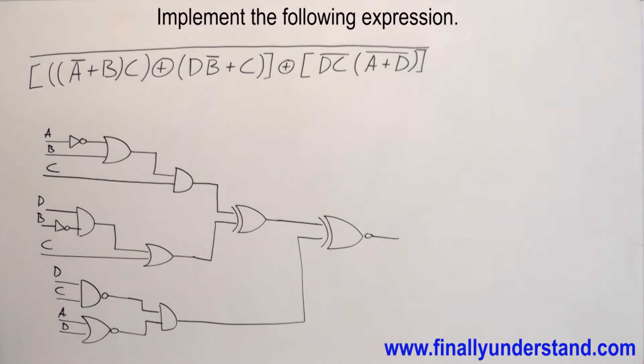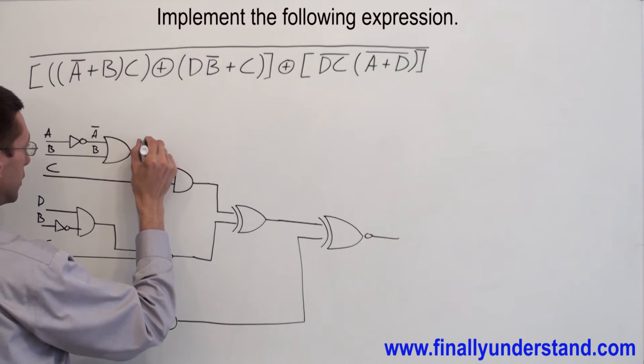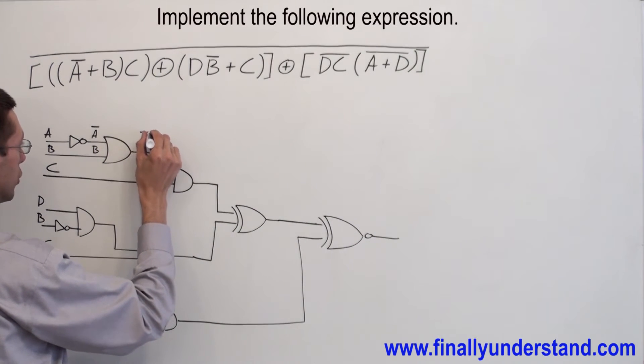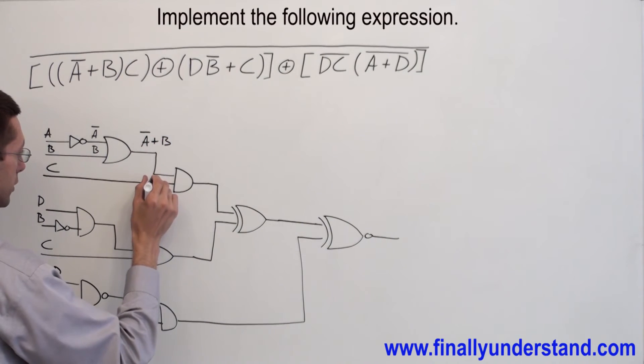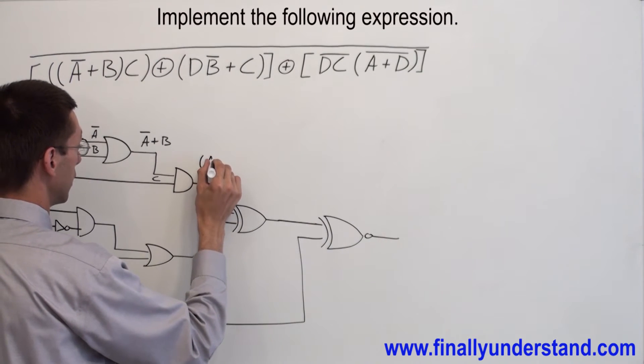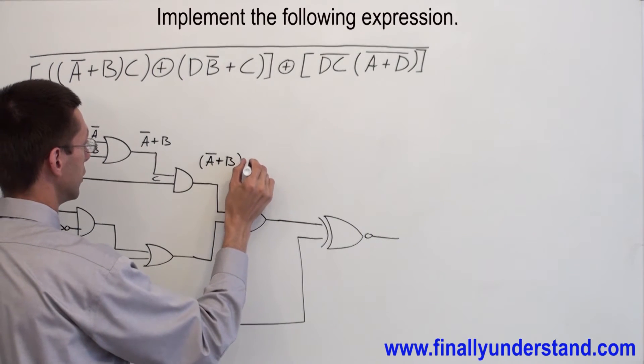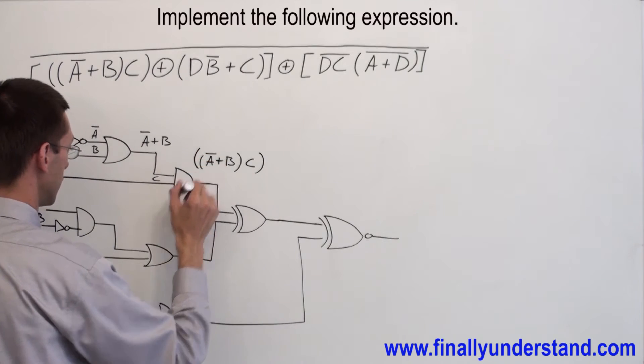This is the circuit for my expression. Let's take a look if this is correct solution. Let's find the output function of this circuit. I have A going to the inverter, so that's why I'm going to have over here A bar. This is going to be my B. This is A bar or B. This is C. This is an AND gate. That's why I'm going to have A bar or B times C.